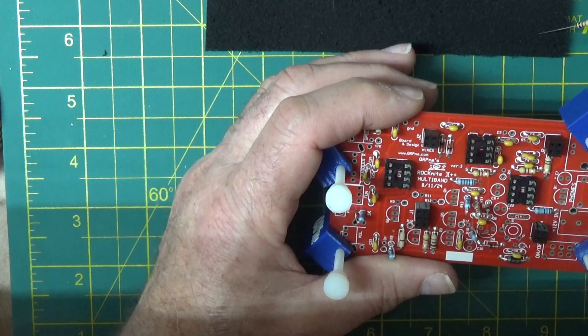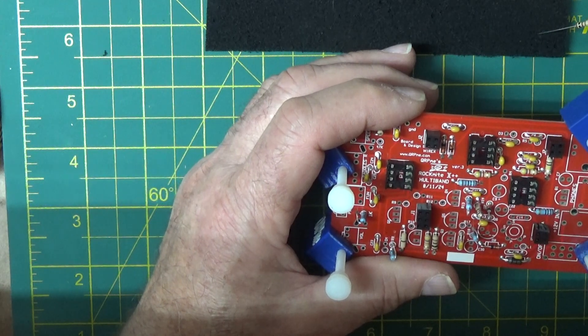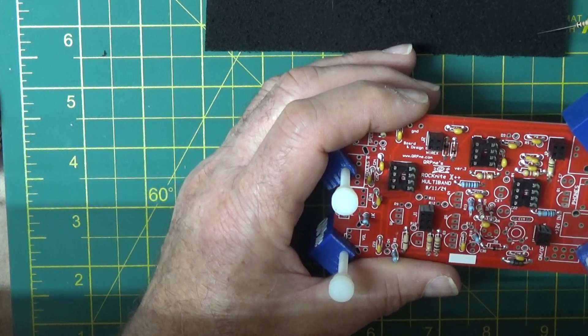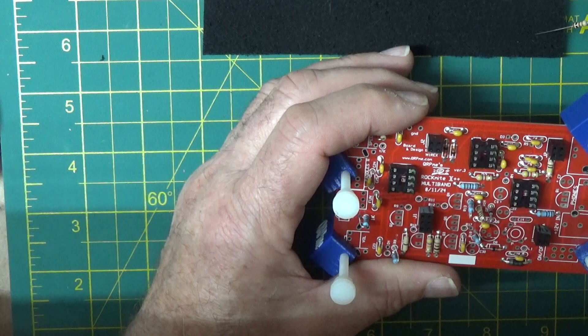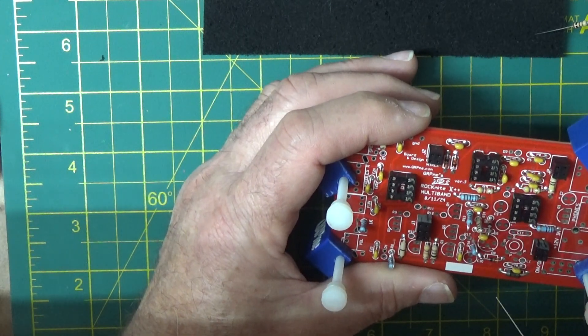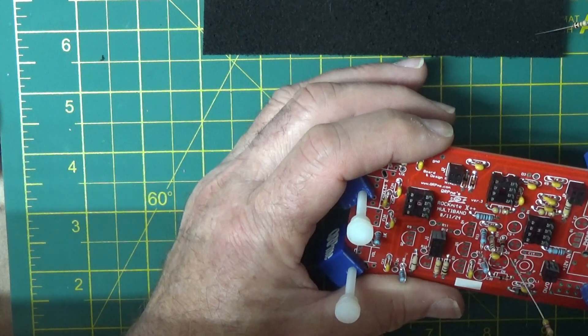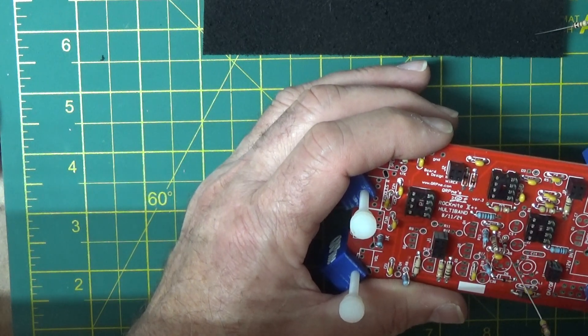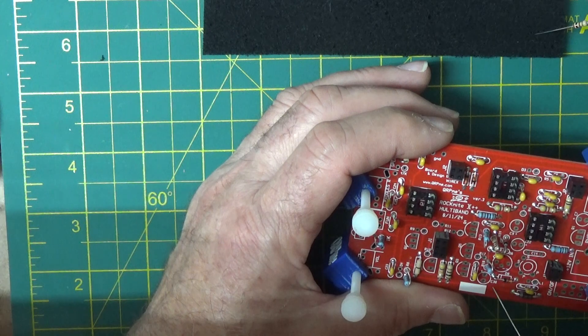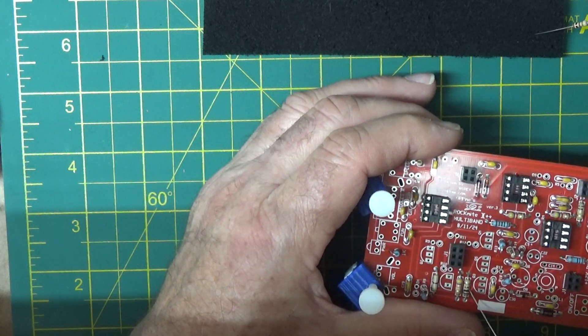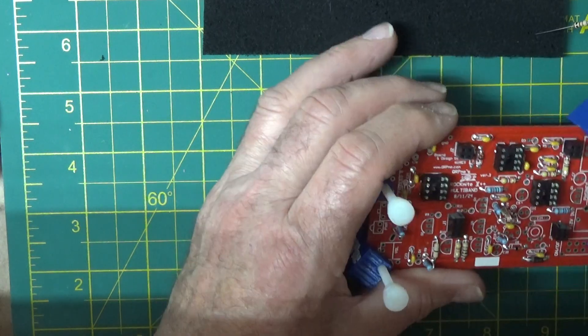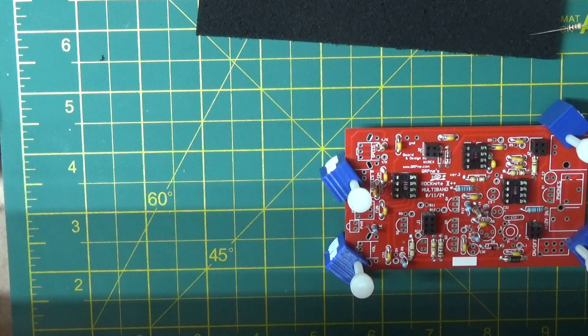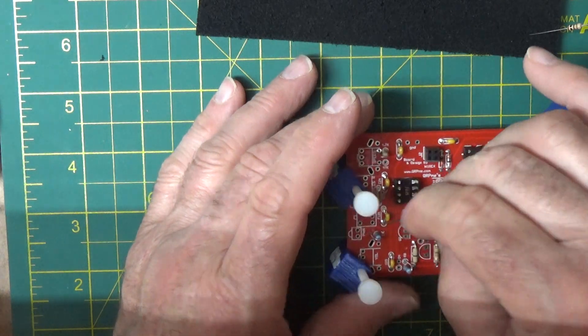We got those in there. R9 over by the oscillator. There it is, I got it. Yeah, I'll fix that, I'll make a R9 right here.